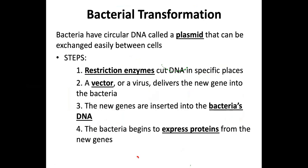Bacteria have circular DNA called a plasmid that can be exchanged easily between cells. We take restriction enzymes — those are what do the cutting — and they cut DNA at a specific spot, they cut specific sequences. Then that vector, or virus, delivers the new gene into the bacteria. Now the new genes are inserted into that bacteria's DNA. Once that happens, the bacteria can now express proteins from the new gene.